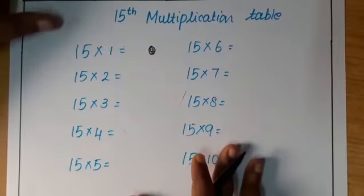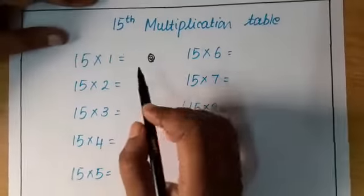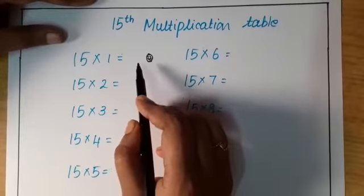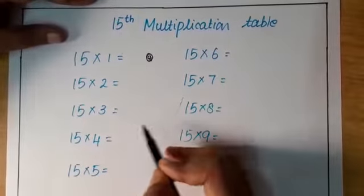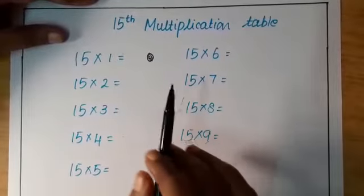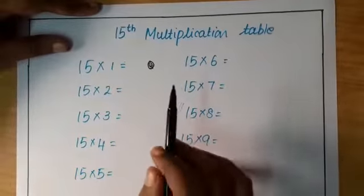Now let's start. So for 15th multiplication table, you have to write 5, 0, 5, 0 similar to that of 5th table as I explained before in my previous video.